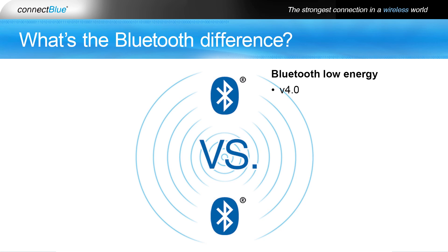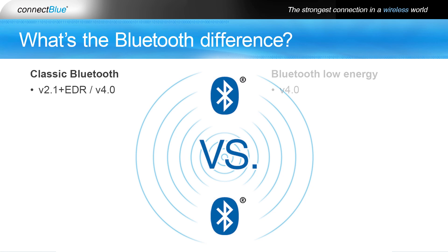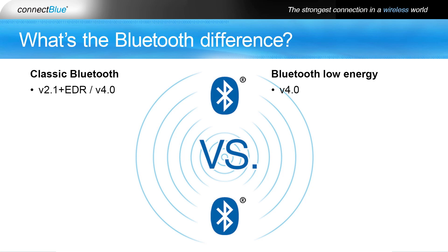Bluetooth version 4.0, which features low energy technology, was launched in 2011. Classic Bluetooth is also part of version 4.0, but is more typically referred to in, for instance, version 2.1 plus EDR. Important to note is that both flavors will be used, but they will be used differently.